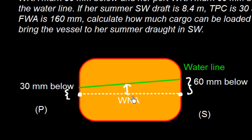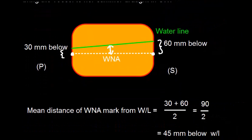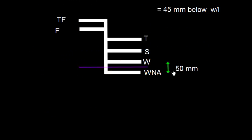We can find the mean distance — shown as a dotted line — between the two WNA marks and the waterline. The mean distance of the WNA mark from the waterline is the sum of the two divided by two: (30 + 60) / 2 = 90 / 2 = 45mm below the waterline.